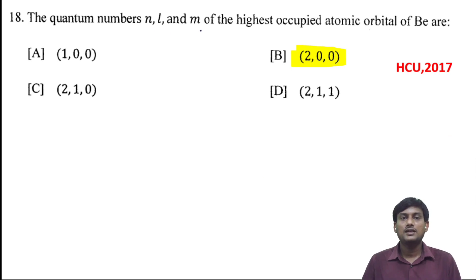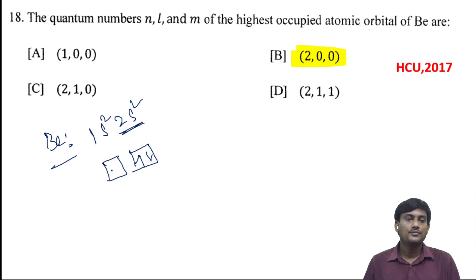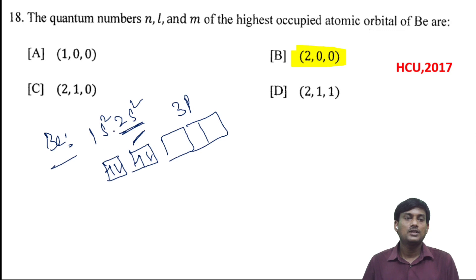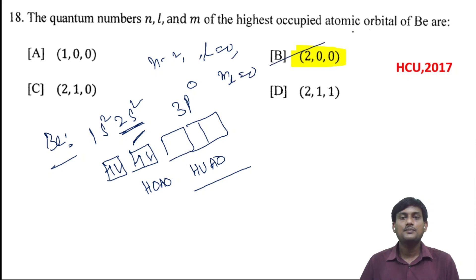The quantum numbers N, L, and M of the highest occupied atomic orbital of beryllium. The electron configuration of beryllium is 1s², 2s². The 2s orbital is the highest occupied orbital, and 2p is the lowest unoccupied orbital. The quantum numbers for the 2s orbital are N=2, L=0, and M=0. This is the correct option.